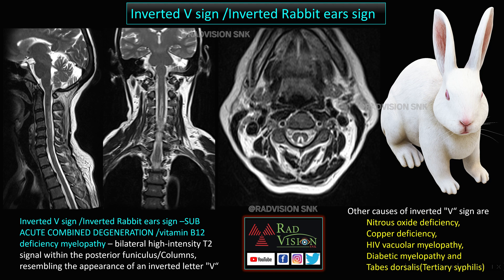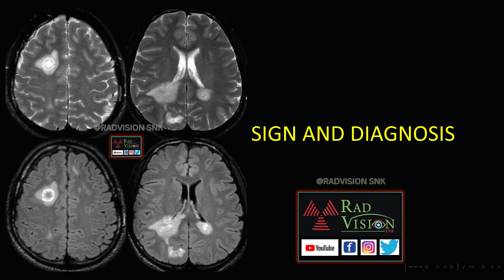This sign is commonly seen in subacute combined degeneration or vitamin B12 deficiency myelopathy. Other causes of the inverted V sign — also called the inverted rabbit ear sign — include nitrous oxide toxicity, copper deficiency, HIV vacuolar myelopathy, diabetic myelopathy, and tabes dorsalis, which is tertiary syphilis.